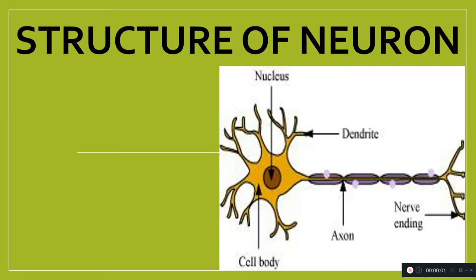Hi, this is Sharmin. Today I'm going to teach you the structure of a neuron. Tissue that can receive stimulus from the environment and transmit accordingly to make an appropriate response is called nervous tissue. Nervous tissue is composed of many nerve cells, or neurons. The neuron is the basic functional unit of the nervous system.